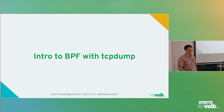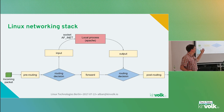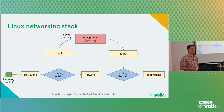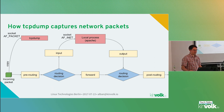I'm starting this talk by showing BPF with tcpdump. I guess everybody knows tcpdump. You are very familiar with diagrams where a network packet comes to a network interface, there is some routing decision, and it can be routed to a local process like Apache in this example. tcpdump can get all the packets that go to a network interface, and to do that it needs to get the packets even before a routing decision has been made — so even if the packets are dropped, tcpdump can get a copy.